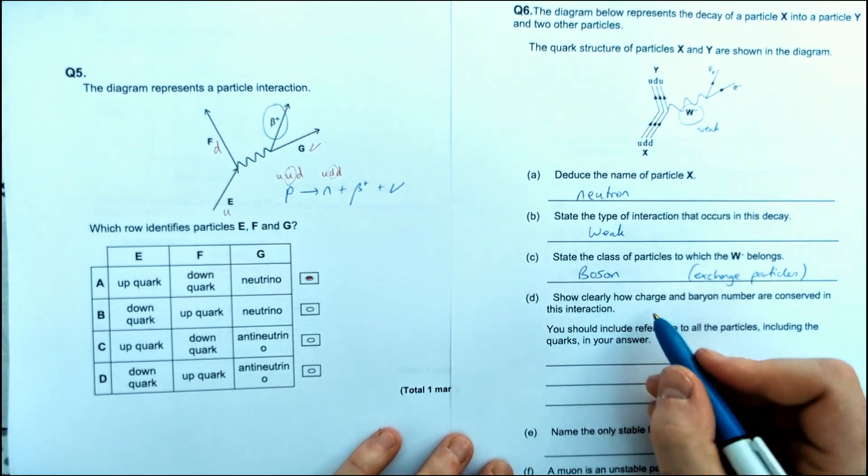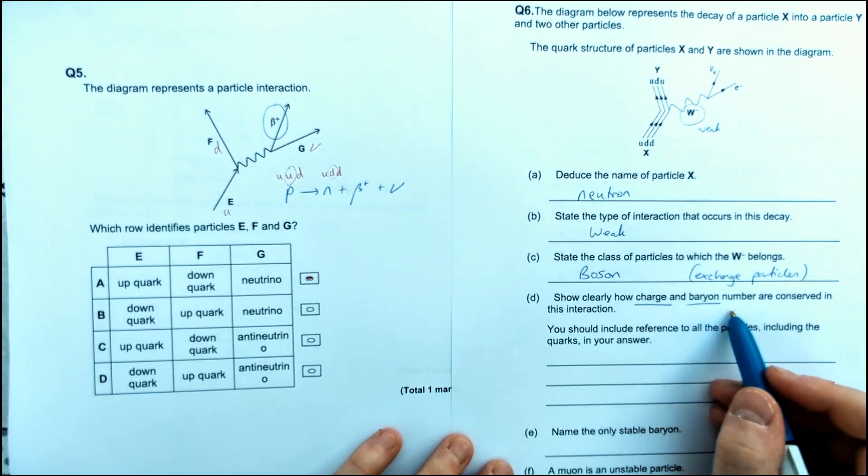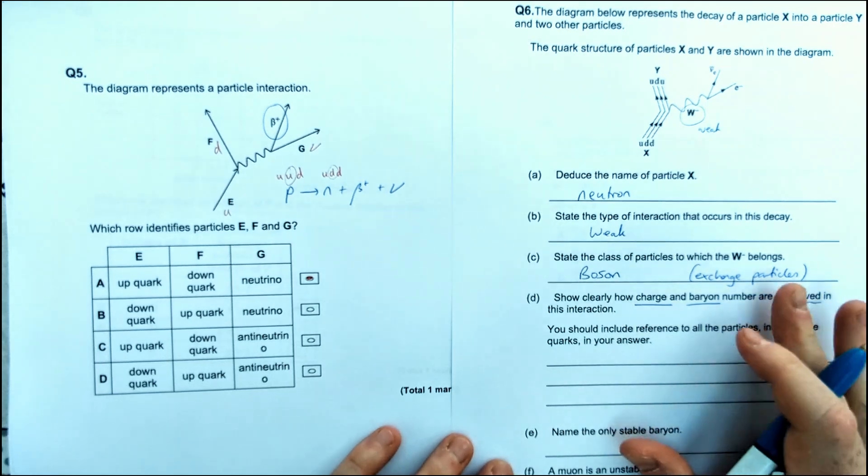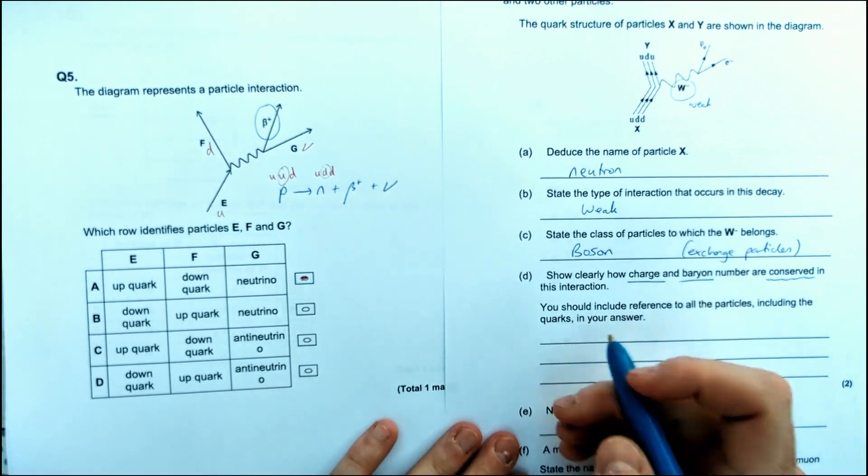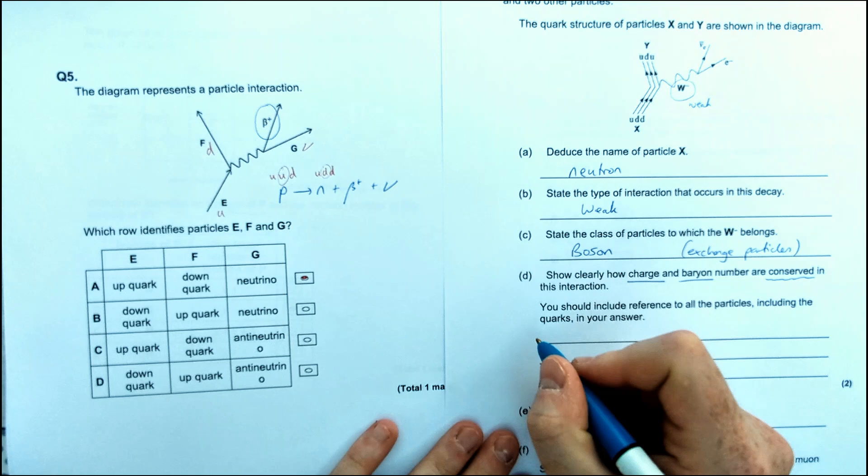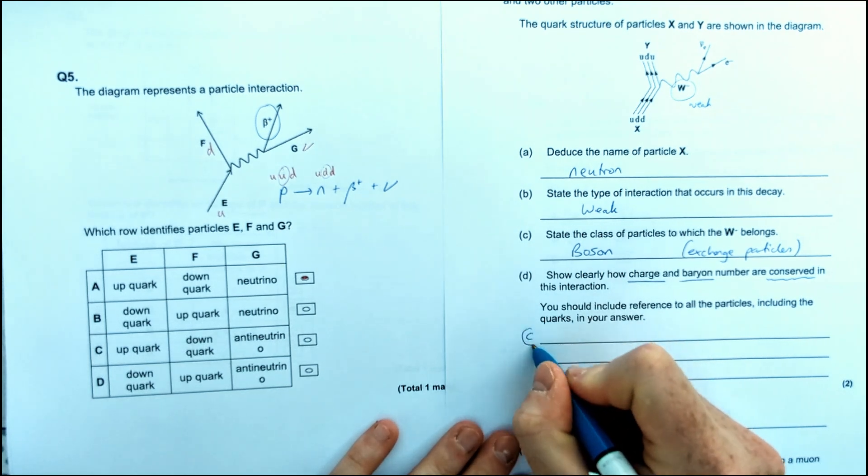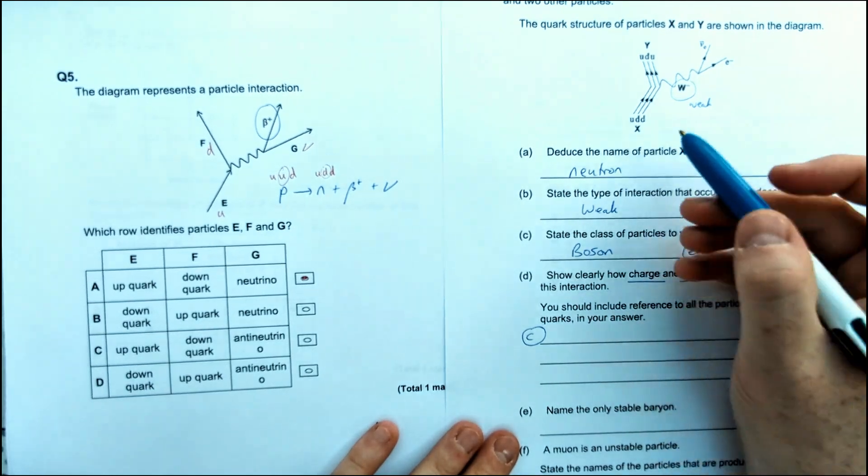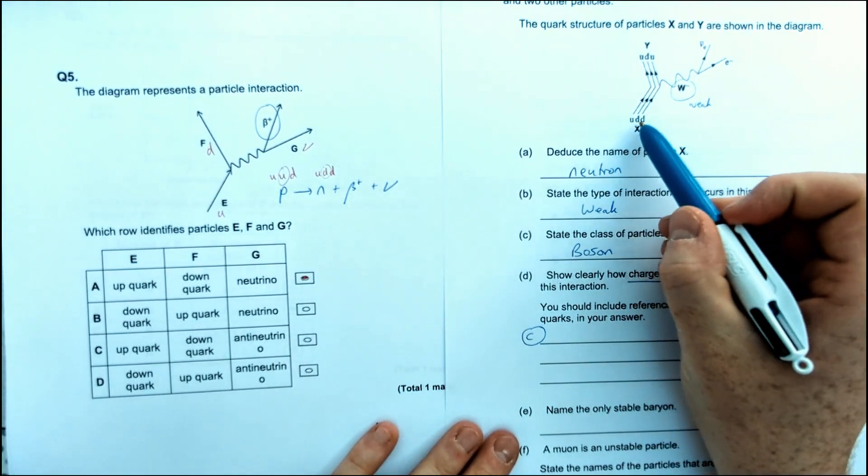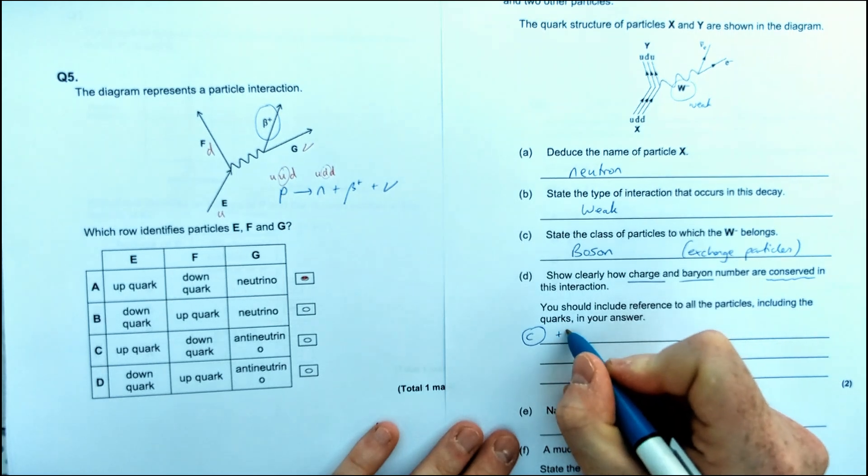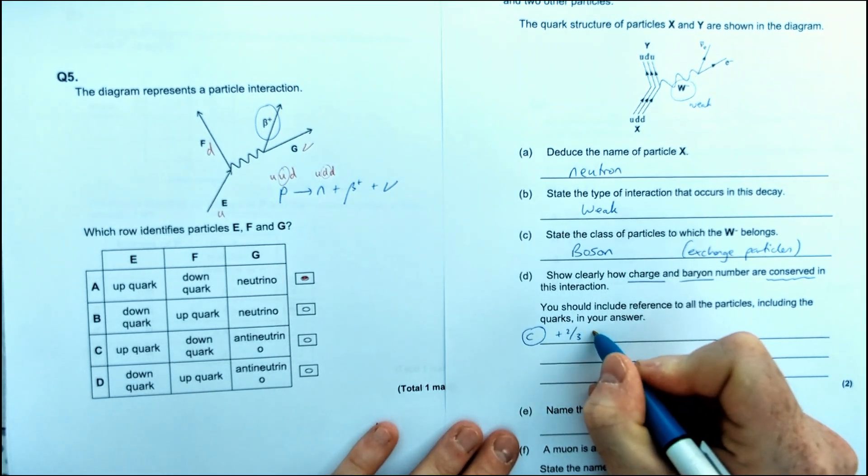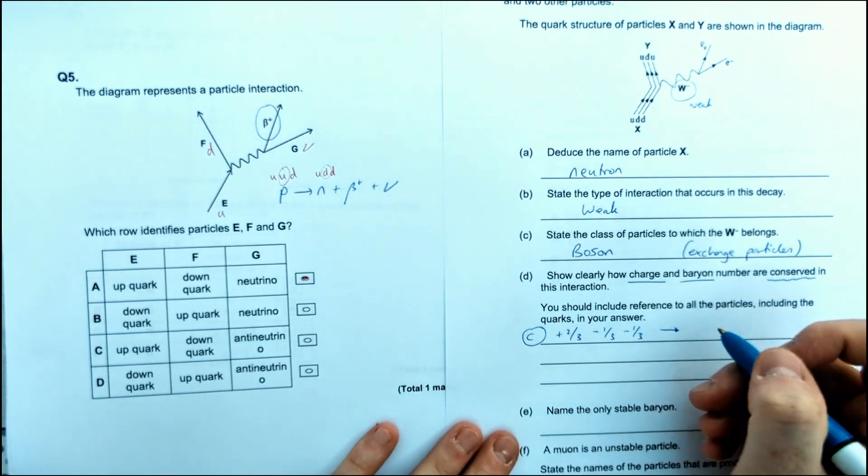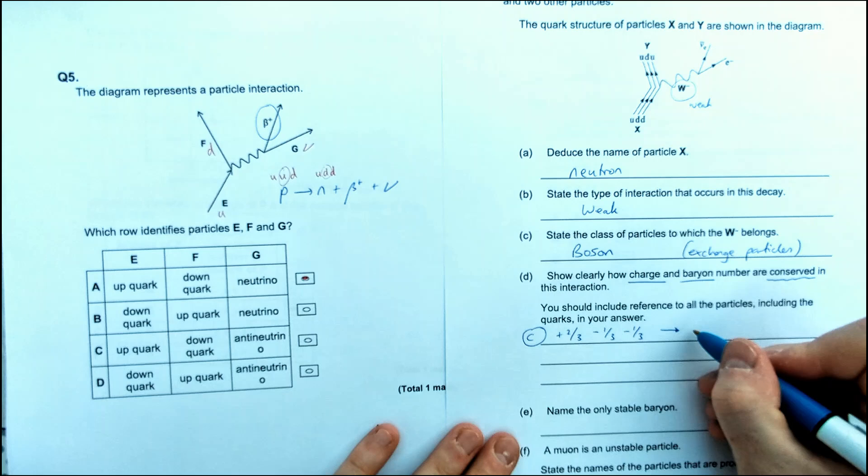The next one, it shows how a charge and baryon number conserved in this interaction. These examiners love giving this type of question about conservation of different things. So how to kind of make life easier a little bit is just put a little C there for charge, and then we'll do sort of before and afterwards. So we could do the whole thing, and we've got charge before. So up, we've got this whole information in our equation sheet. So we've got plus two-thirds for up, minus a third for down, minus a third for down makes.